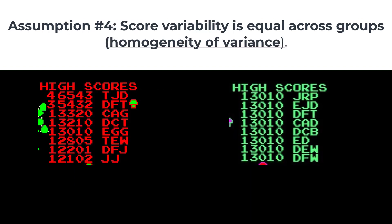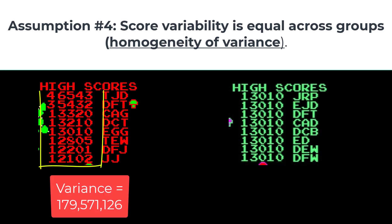Assumption number four: score variability is equal across groups. This is the homogeneity of variance assumption. For example, if there is a wide range of Centipede scores for the energy drink group,